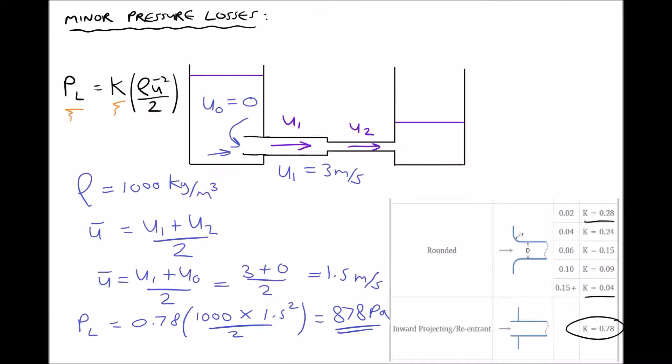Let's take a look at another example and this time let's assume that our section of pipe has a diameter d1 equal to 120 millimeters. And let's assume that we have a rounded inlet and the radius of that inlet is 5 millimeters.